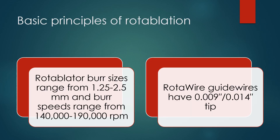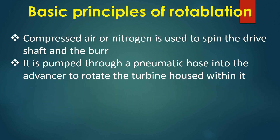Rotoblator burr sizes range from 1.5 to 2.5 mm and burr speeds range from 140,000 to 190,000 rpm. Rotowire guide wires have 0.009-inch and 0.014-inch tips. Compressed air or nitrogen is used to spin the drive shaft and the burr, pumped through a pneumatic hose into the advancer to rotate the turbine housed within it.